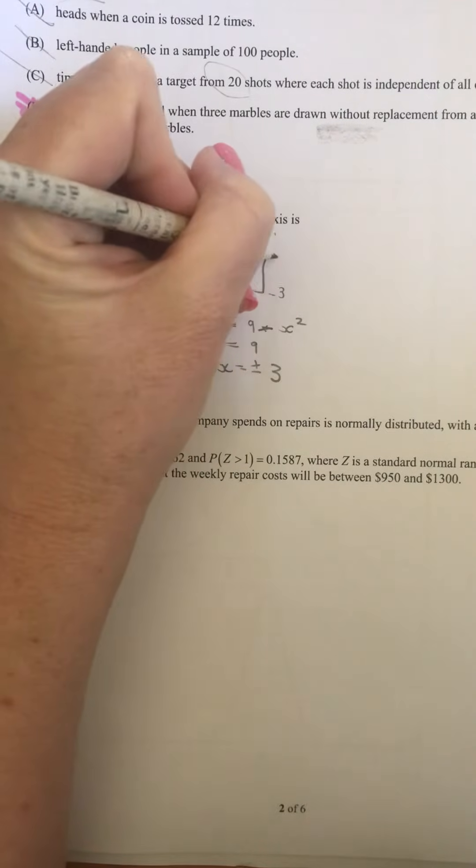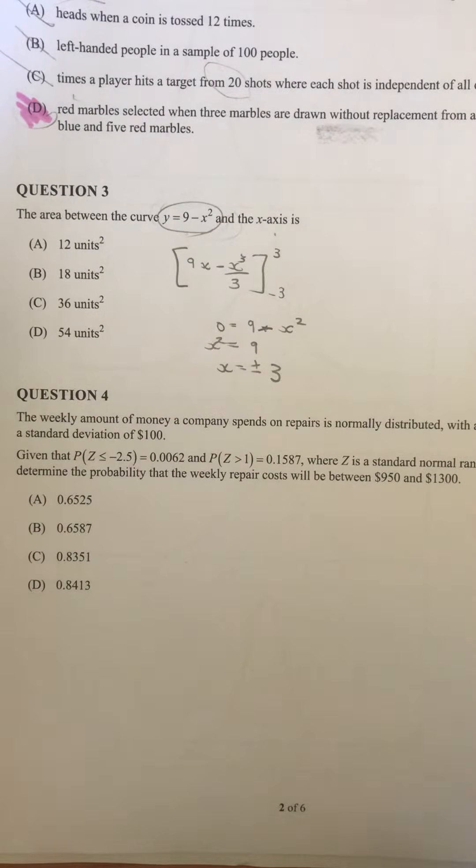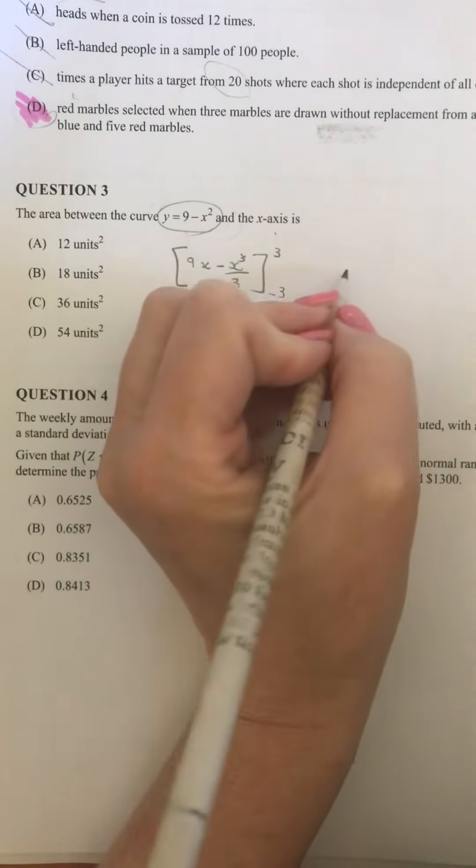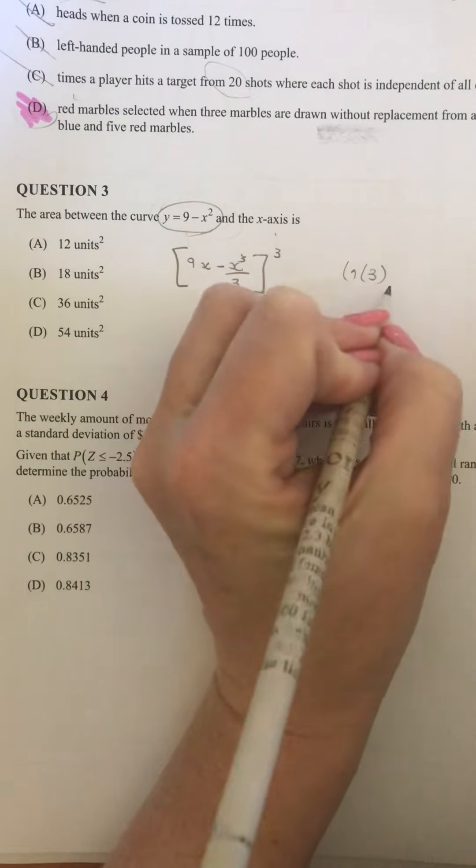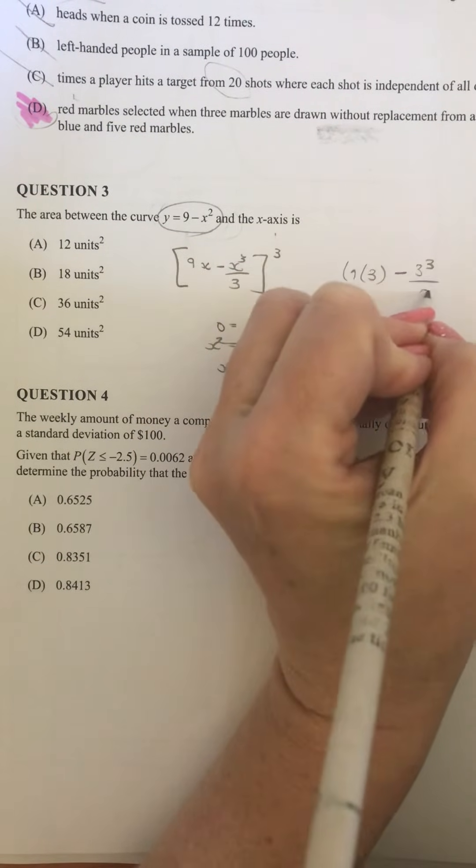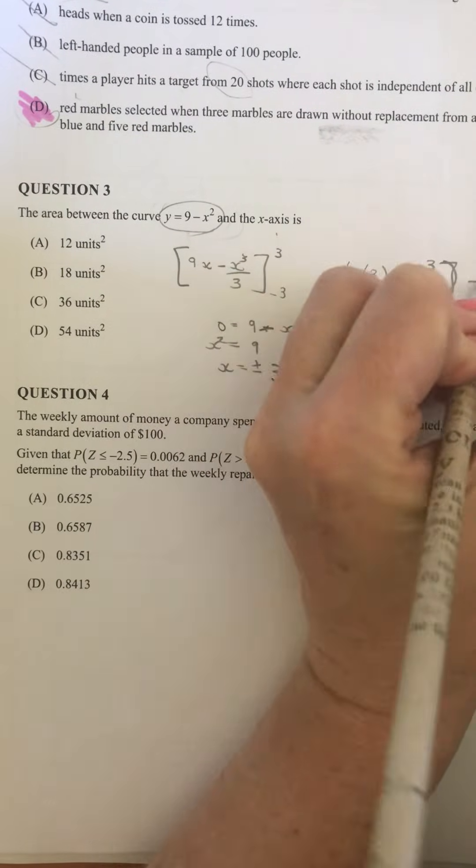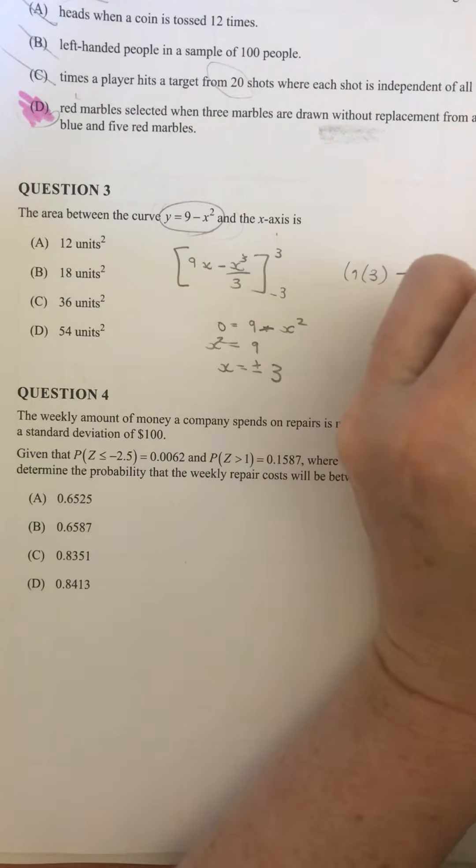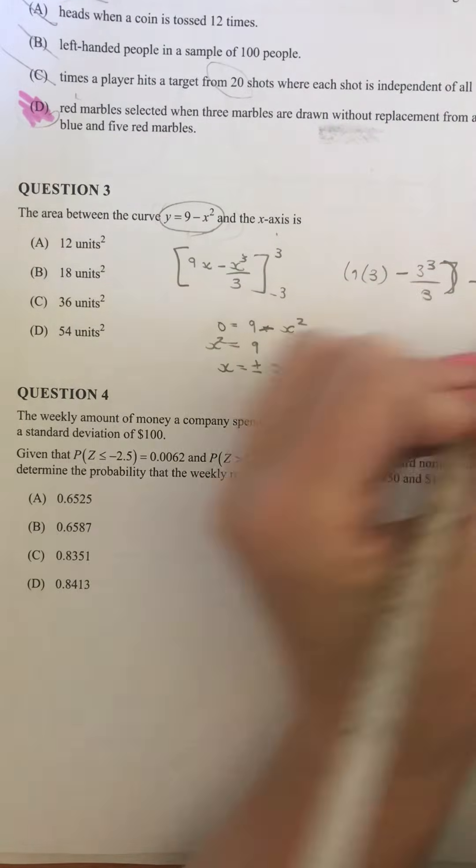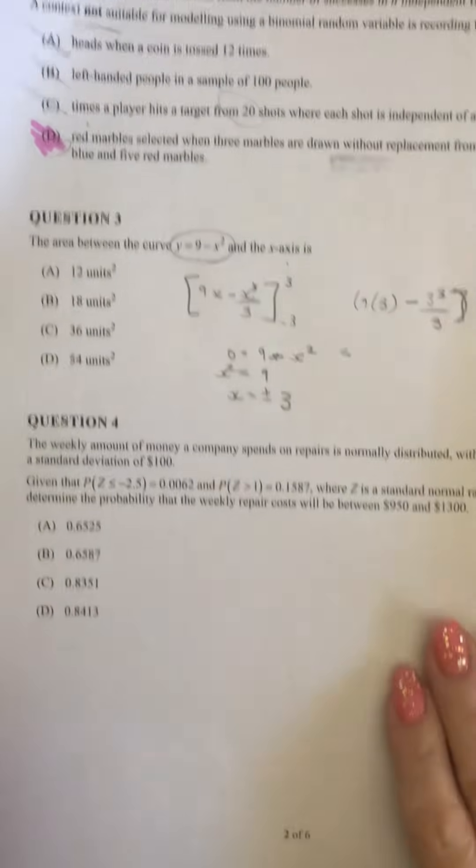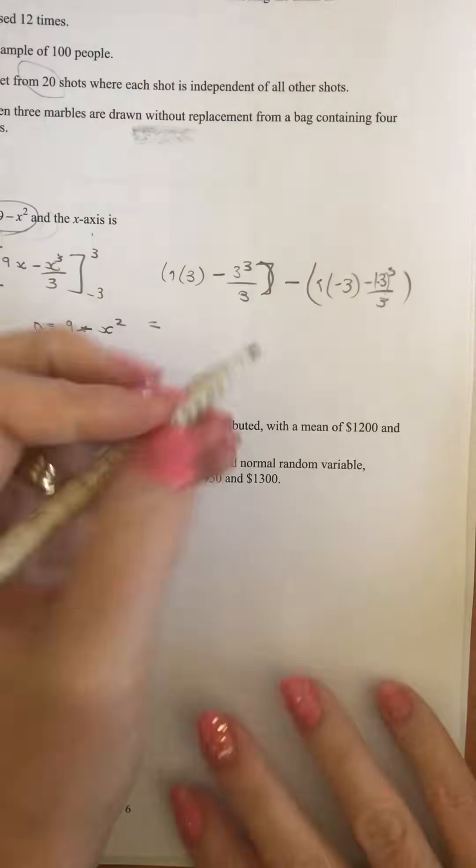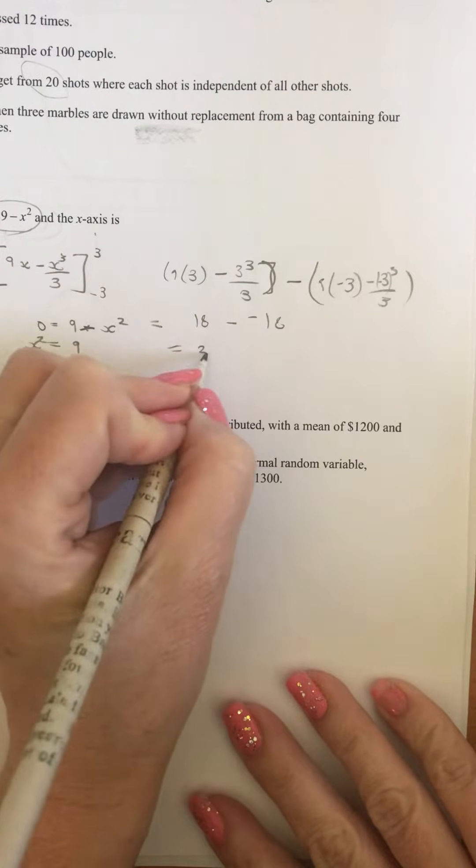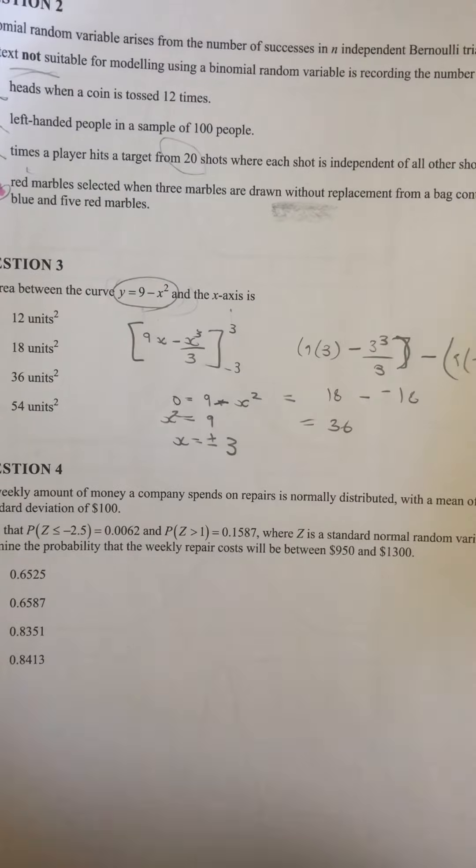So we're going to be putting in negative 3 to positive 3 there. And we're going to sub that into that equation. So when we've got our positive 3, we've got 9 times 3 minus 3 cubed over 3. And we're taking away from that 9 times negative 3 minus negative 3 cubed over 3. So we end up with 18 here. And we're subtracting negative 18 from that, which gives us our 36, which is our answer of C.